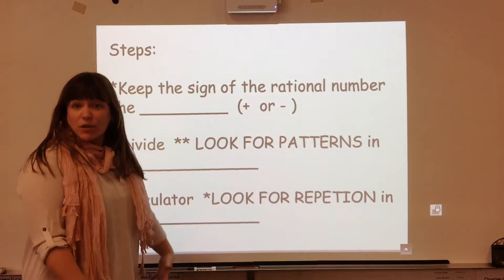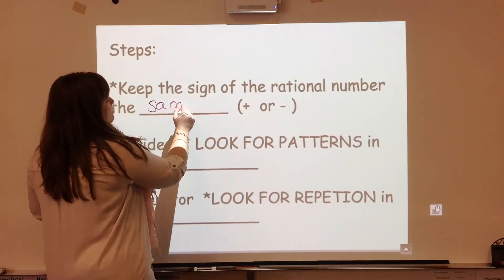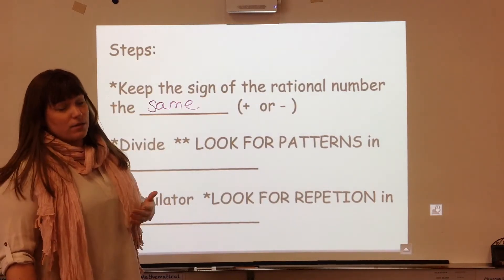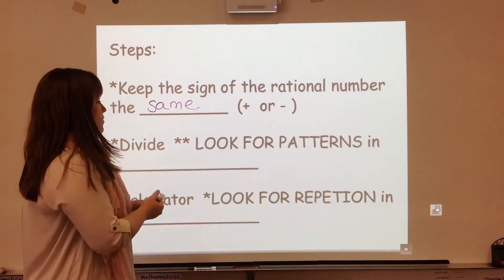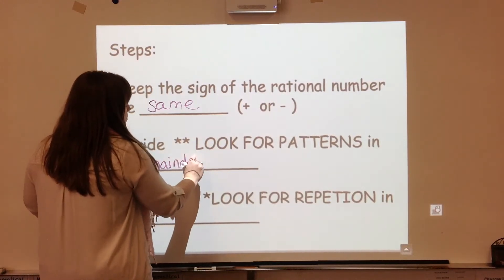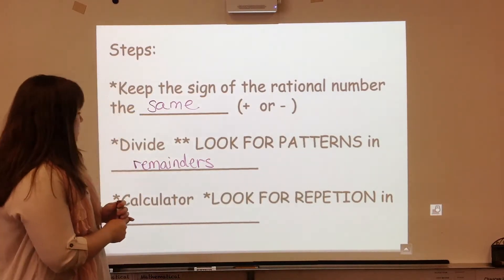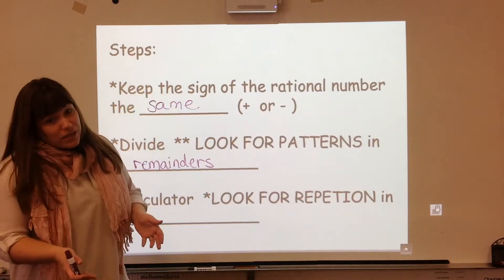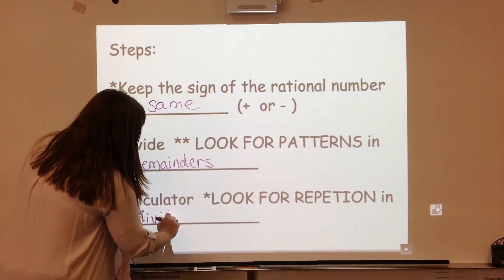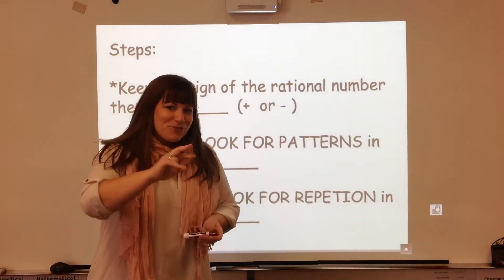The steps for repeating decimals are pretty much the same. You're going to keep the sign of the rational number the same, just like before. When you divide, this is the long division way, numerator and denominator, same thing. But I want you to look for patterns in the remainders. That will give you a clue that the dividends, the number in the answer, is going to repeat as well. If you're doing a calculator, you're just seeing the dividend in the display, so you're going to want to look for repetition in the dividend. And be careful, make sure you know whether it's one number repeating or if there's a pattern, two numbers or even more.